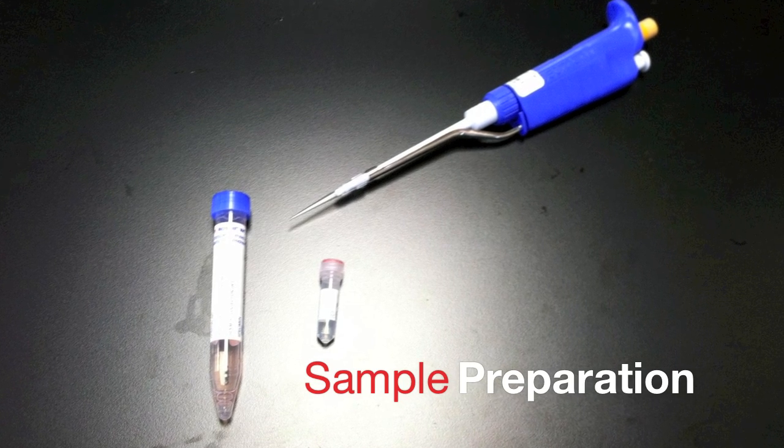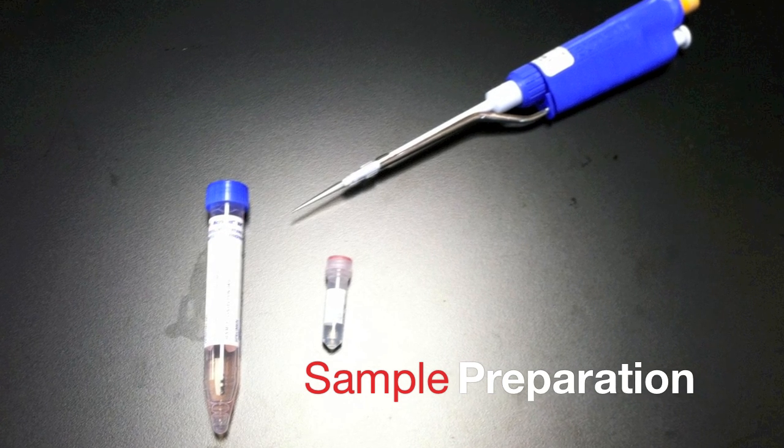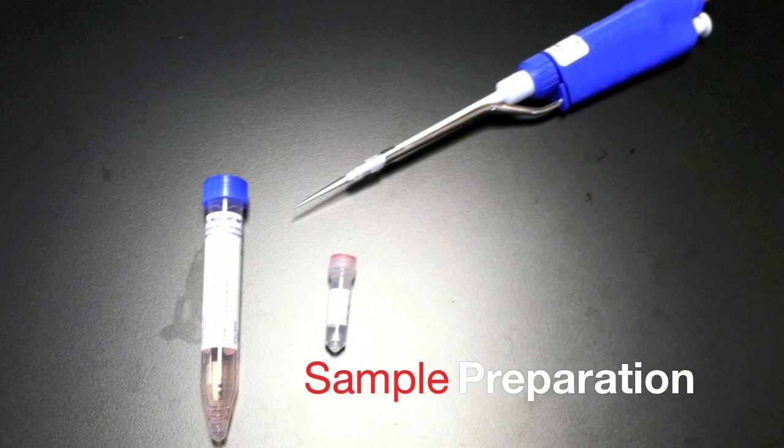Sample prep consists of a simple one-step dilution in which specimens in viral transport medium are diluted 40-fold in dilution buffer.